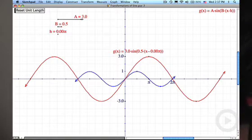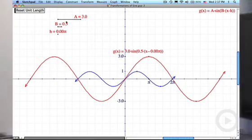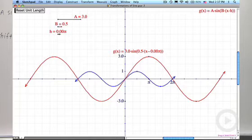Right now, a is 3 and b is 0.5. I'm going to leave those fixed for the moment. Let's adjust the value of h and see what happens.